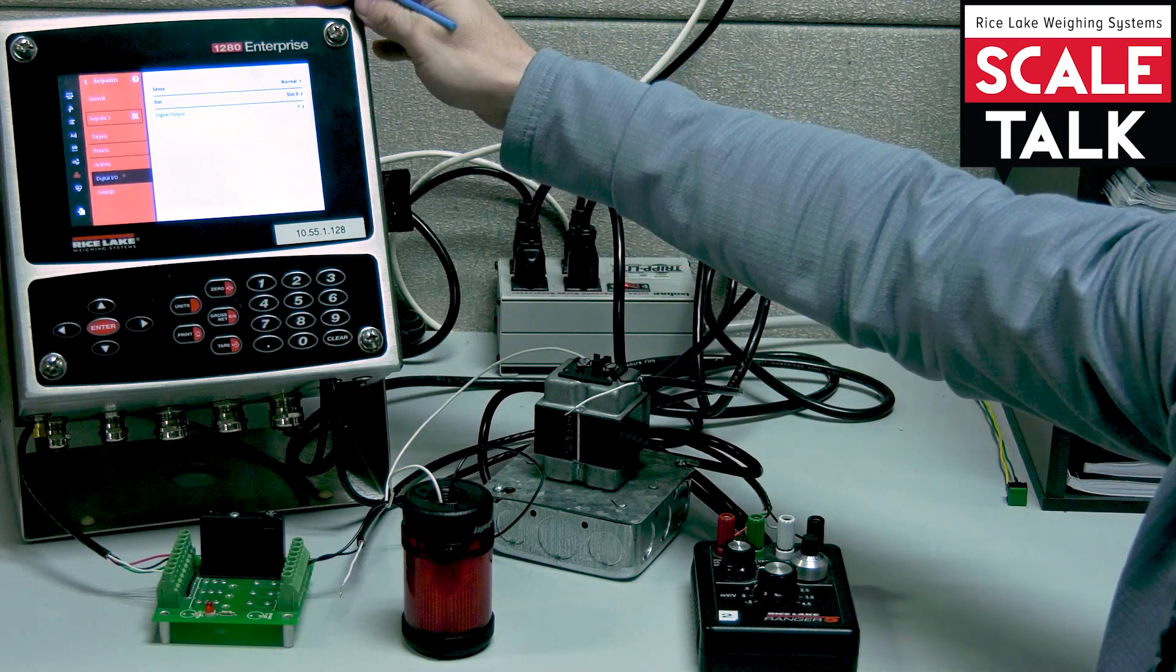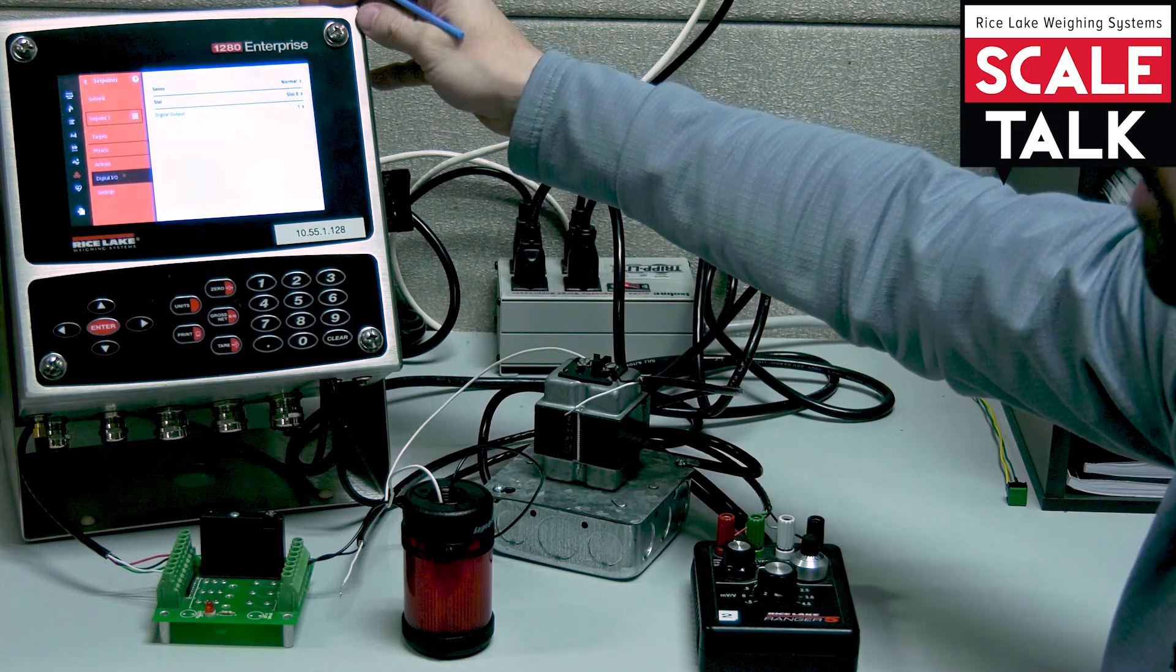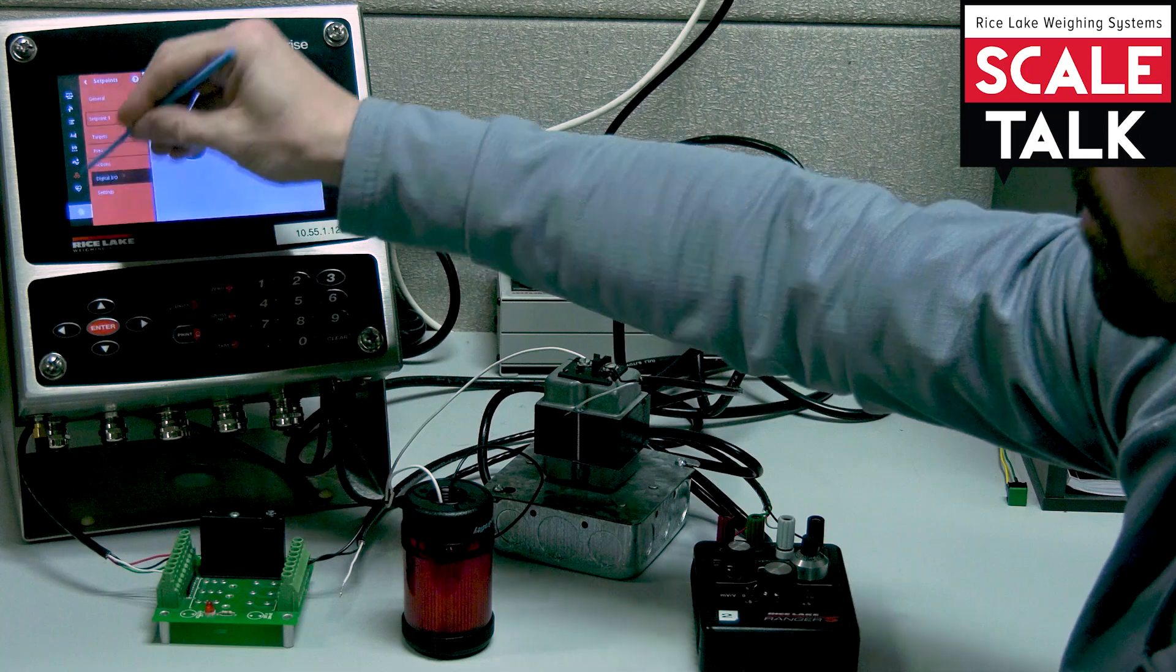And that's it. That's all I need for a free running set point. We've got a set point established with the value and we assign it to the I.O. Let's go ahead and save and exit.